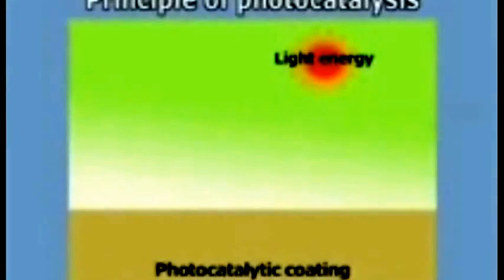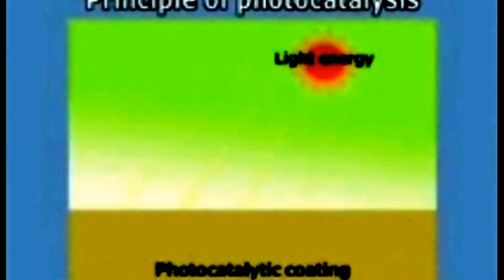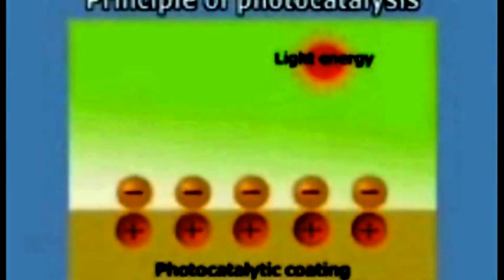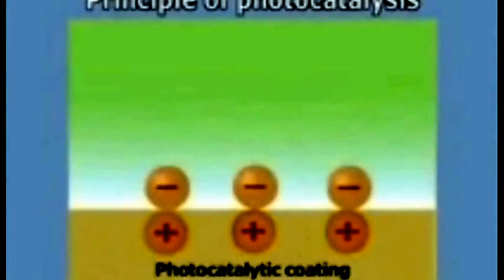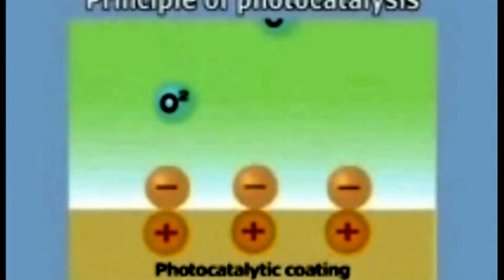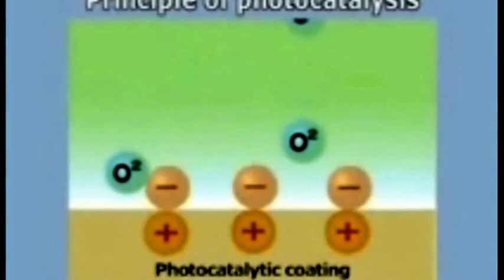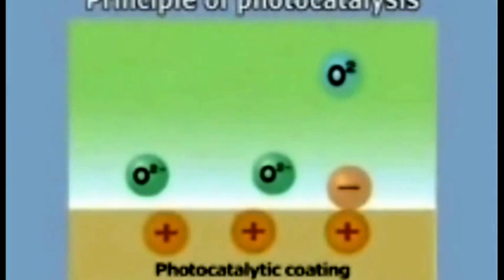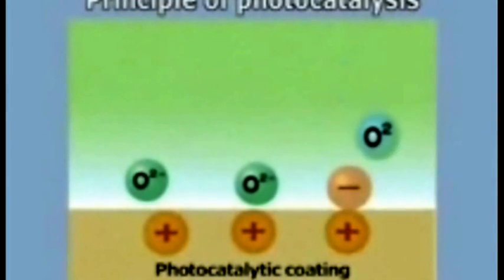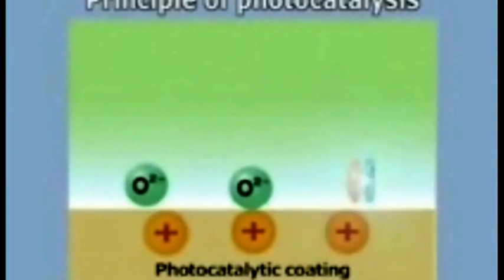Let us examine the principle. When light energy is irradiated on the surface of titanium dioxide, electrons are released. The released electrons bind with oxygen to become superoxide anion.